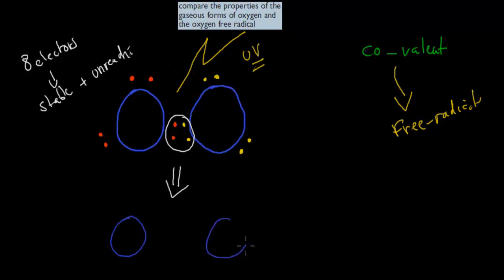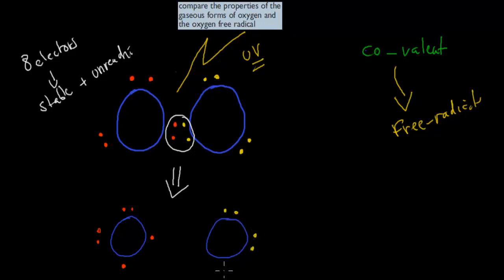Beforehand each of the oxygen atoms had two double pairs. Now it's going to be different — it's going to have two pairs, but these electrons are going to be in a different configuration. They've broken apart and they're not in their normal configuration. This actually makes it even less stable. So now we had one oxygen molecule beforehand; we broke that bond through light, and now we have something even less stable than before. Each of these is called a free radical.